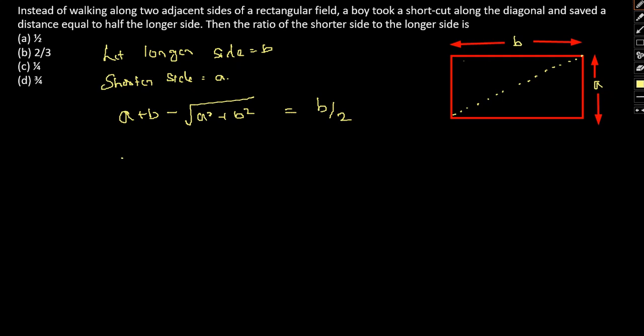So now this can be further written as A plus B minus square root of A square plus B square equal to B by 2. So square root of A square plus B square can be simply written as A plus B by 2.